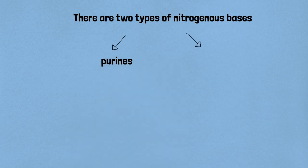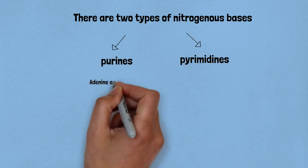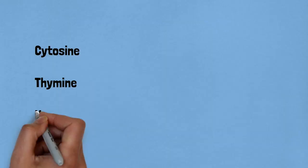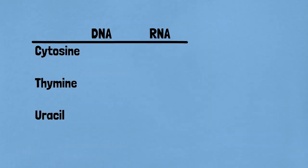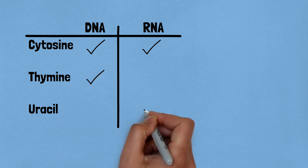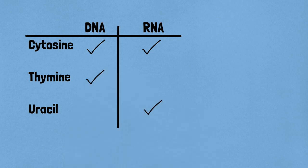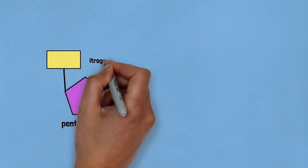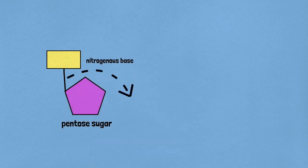Purines consist of adenine and guanine, and pyrimidines consist of cytosine, uracil, and thymine. Cytosine is common for both DNA and RNA, and thymine is present only in DNA. Uracil is present in RNA in place of thymine.